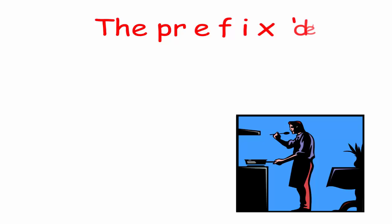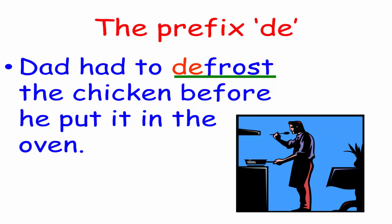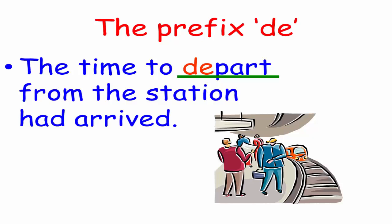Now, the prefix de. Dad had to defrost the chicken before he put it in the oven. He had to remove the ice or defrost from the chicken. Another example. The time to depart from the station had arrived. Depart means leave.